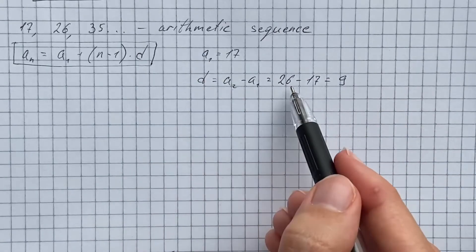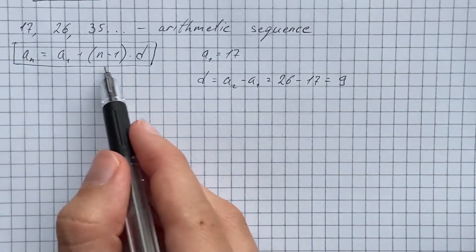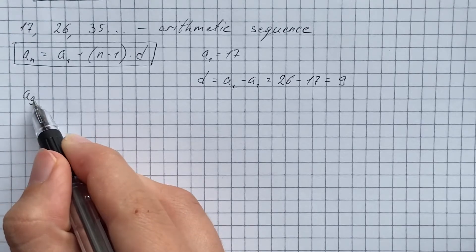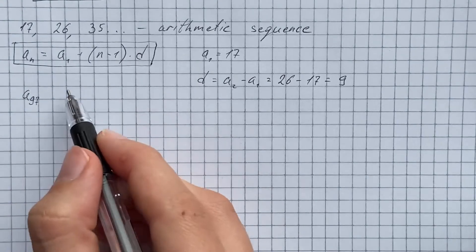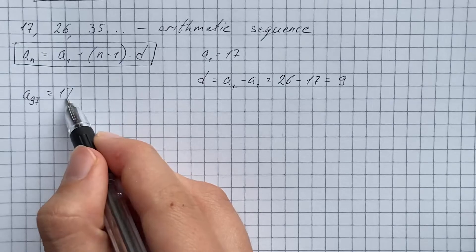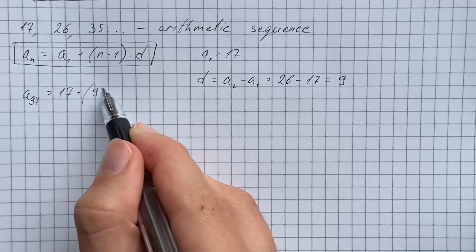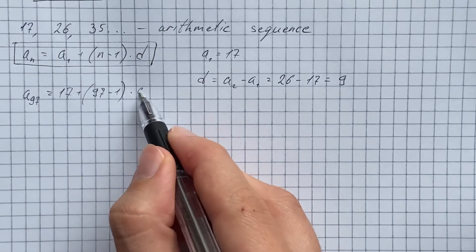So now we substitute this in our equation, and I get that the 97th term equals 17 plus 97 minus 1 times 9.